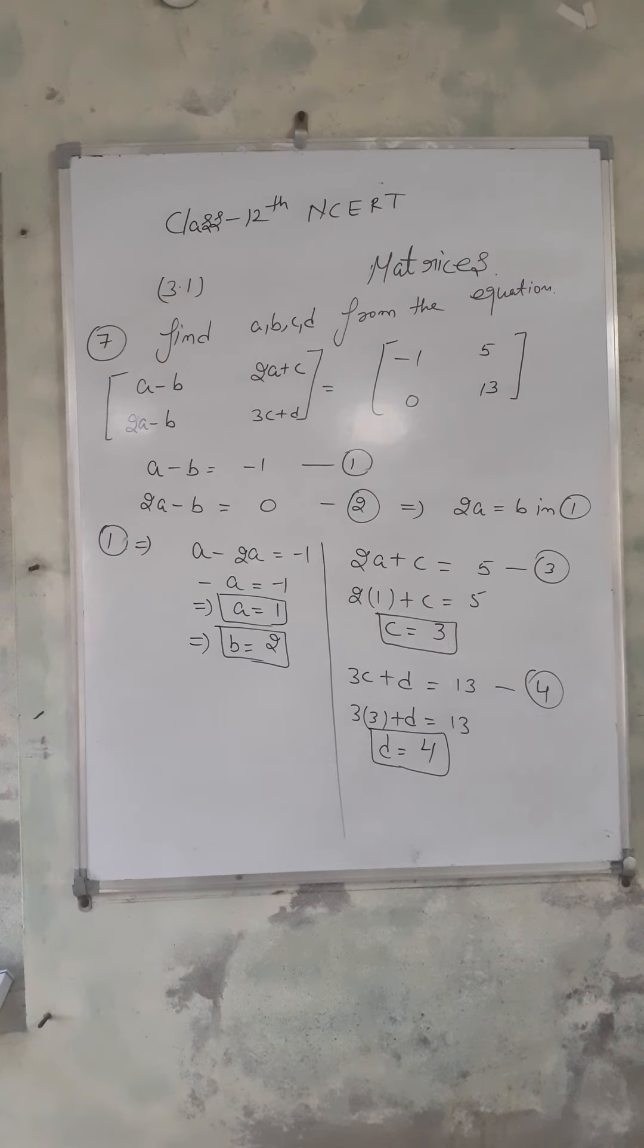Question number seven: find a, b, c, d from the equation. As in Question 6, we simply solve for a, b, c, d. Both matrices are equal, so first element equals first, second equals second, third equals third, and fourth equals fourth. First, I'll solve: a minus b equals minus 1, and 2a minus b equals 0.